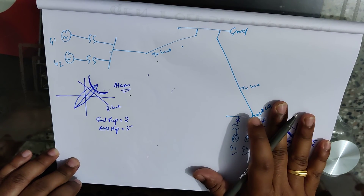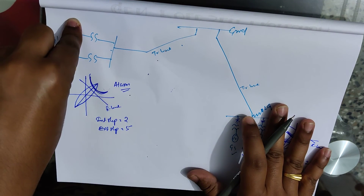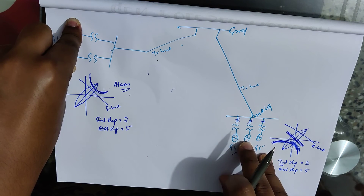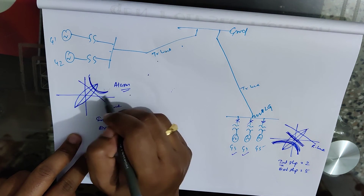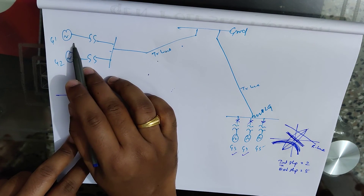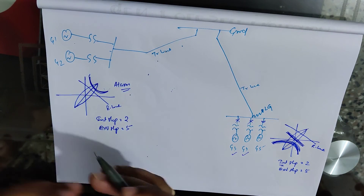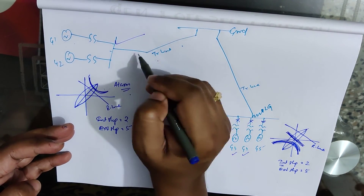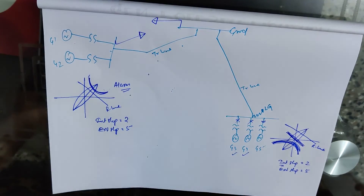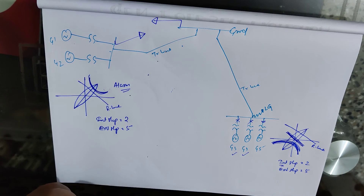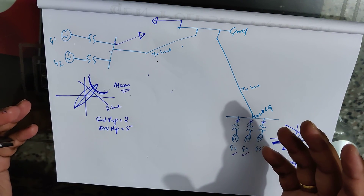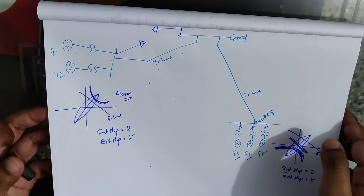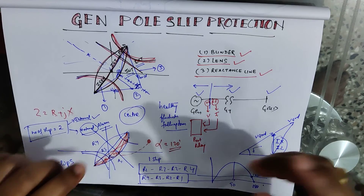These generators trip to safeguard the adjacent generators, because if they do not trip, the external swings will eventually create problems at the other station, disturbing the frequency of adjacent drives in the power plant and all consumers connected to the grid. This is a very critical protection. I hope this explanation of pole slip protection — its phenomenon and characteristic — has been helpful. Thank you and have a nice day.